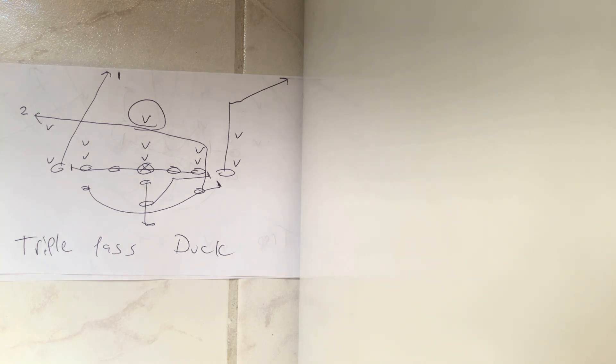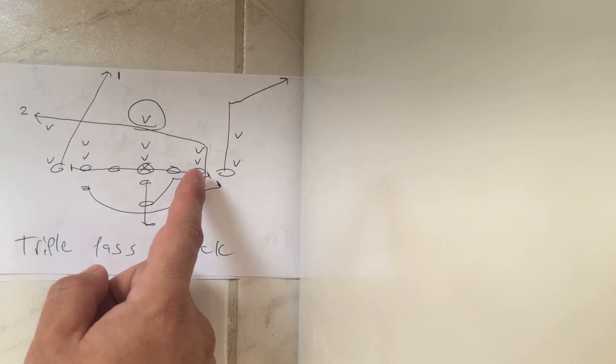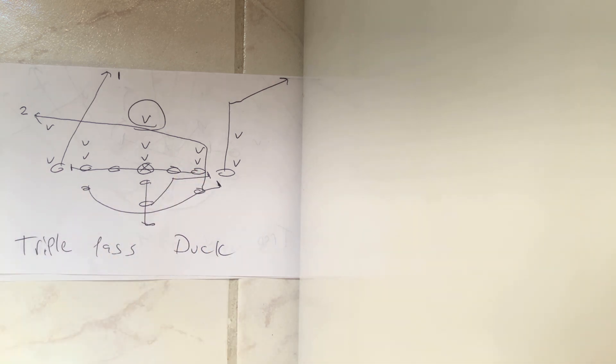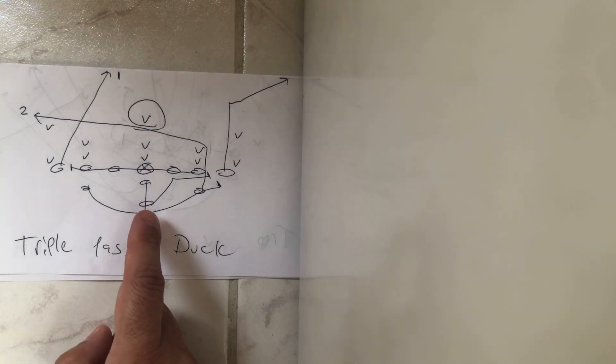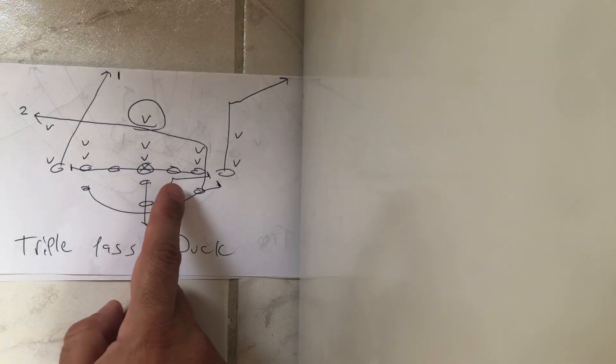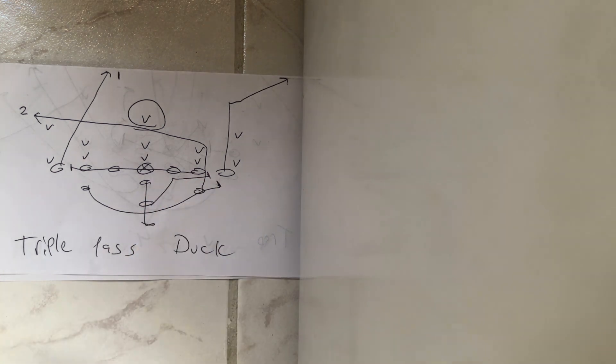What the duck concept is, is off the triple pass. If it's triple pass to the right with duck as the tag, the line is going to slide away from the call and they're going to block the gap away from the call. The B-back's going to run through the guard, touch the guard, flatten out and block the first threat off the tackle.